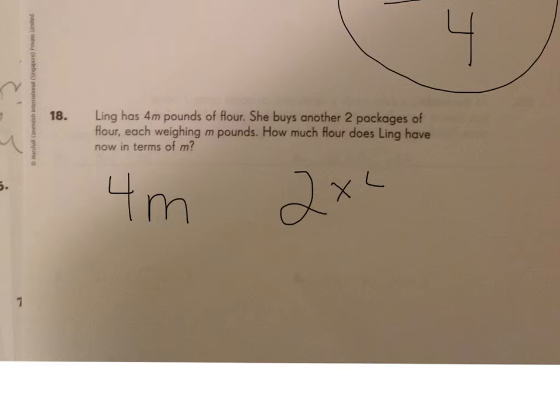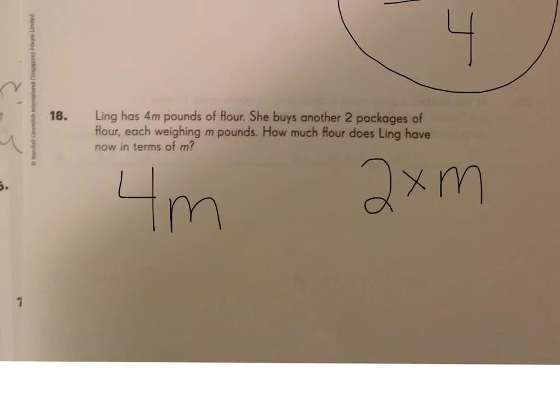He has 4M pounds of flour. He buys another 2 packages, and each of those weighs M pounds. So it's 2 times M, but that could also be 2M. Same exact thing. So he has 4M, buys another 2 packages weighing M pounds.